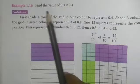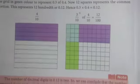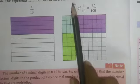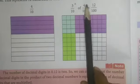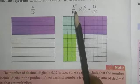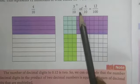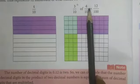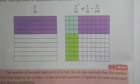Let's do one more example: find the value of 0.3 into 0.4. 0.3 means 3 by 10, and 0.4 is the same as 4 by 10. So 0.3 into 0.4 means 3 by 10 into 4 by 10, which is 3 by 10th of 4 by 10.